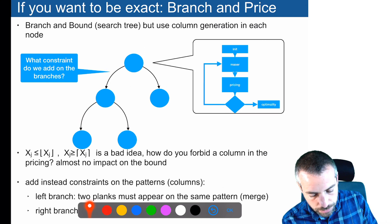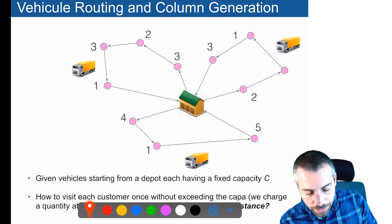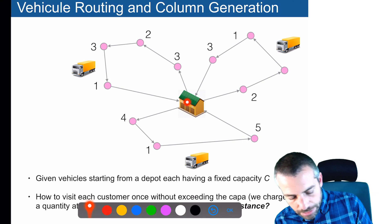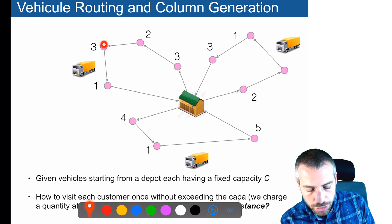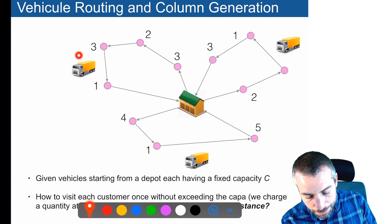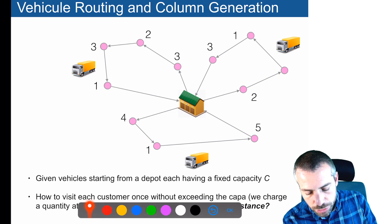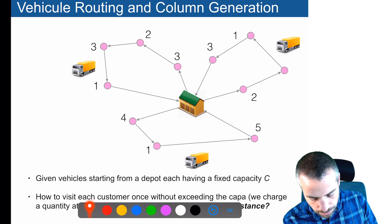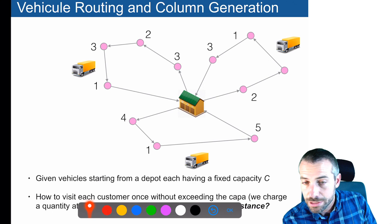This column generation approach is also used for solving vehicle routing problems. In vehicle routing, you have a depot and a set of vehicles represented by trucks, and you need to visit some customers. You want to minimize the total distance traveled by all the trucks. The trucks have a capacity, and each customer has a demand. For a given sub-circuit you cannot exceed the capacity of the truck. The goal is to visit every customer exactly once without violating the capacity of the trucks.